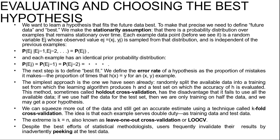Formally, P(Ej | Ej-1, Ej-2, ...) = P(Ej), and each example has an identical prior probability distribution: P(Ej) = P(Ej-1) = P(Ej-2) = ... and so on. Examples satisfying these assumptions are called independent and identically distributed, or IID assumptions.